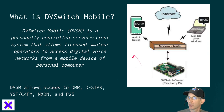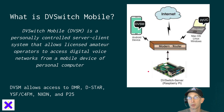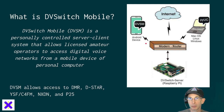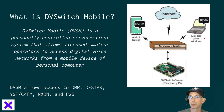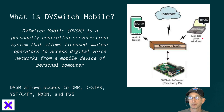A high-level diagram of what this system looks like is the following: you set up the DVSwitch Mobile server on a Raspberry Pi computer that's connected to your local network via your modem and to the Internet. Then you access that server from your mobile device using the Android app, or from your Mac, Linux, or Windows computer using the PUC app, either on that same local network or even if you're on the Internet in a remote location.